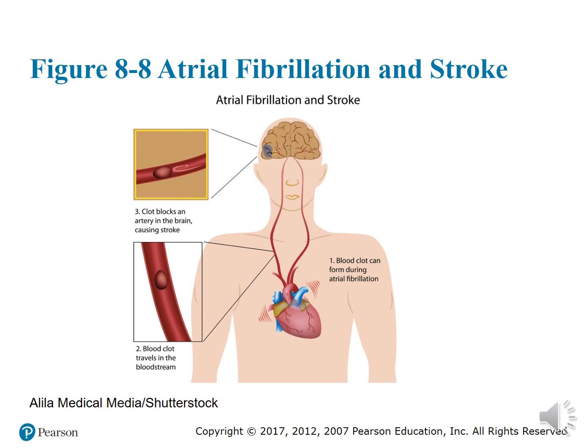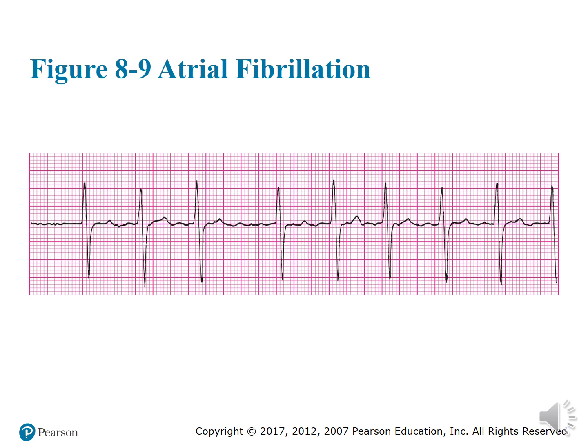This picture shows atrial fibrillation and stroke — the patient hadn't been on blood thinners, so they threw a blood clot traveling through the bloodstream, which can cause a stroke by clogging blood flow to the brain. This is what AFib looks like on an EKG — basically no defined P waves at all, just a whole bunch of squiggly lines between your QRS complexes.